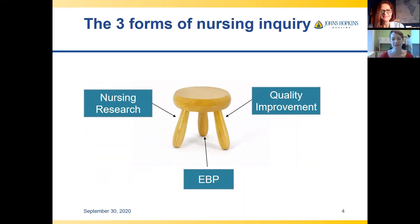So we have the three forms of nursing inquiry. They're all created equal — they're the pegs of a stool. If one of them is out of balance or shorter, the whole stool is going to be wobbly. So you really want to be holding up all three pillars of nursing inquiry equally: EBP, research, and QI.